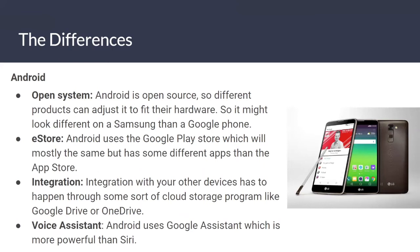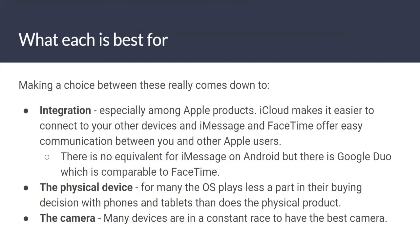Android is an open system, which means you can modify it if you know how. Android is open source, so different products can adjust it to fit their hardware — meaning the store might look different on a Samsung than a Google phone. Android uses the Google Play Store, which mostly has the same apps but some different ones from the App Store. Integration with other apps has to happen through some sort of cloud storage system like Google Drive or OneDrive. Android's voice assistant is Google Assistant, which is more powerful than Siri.